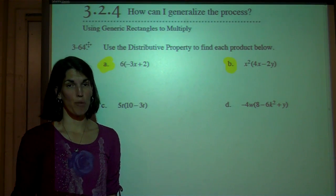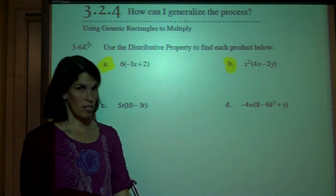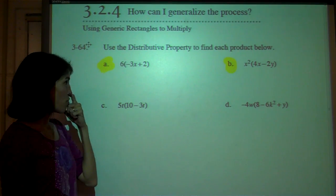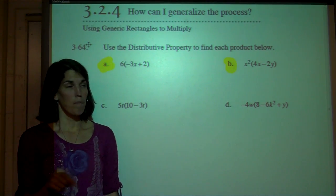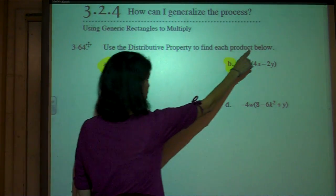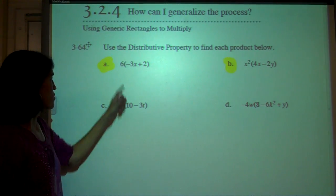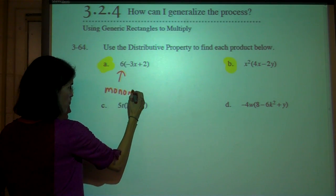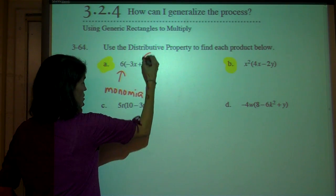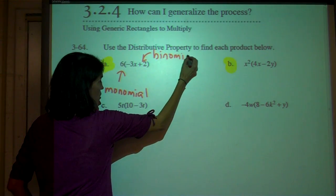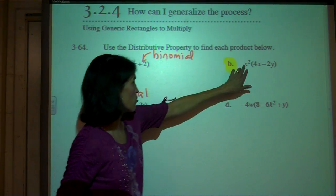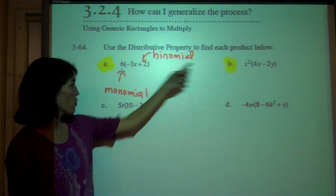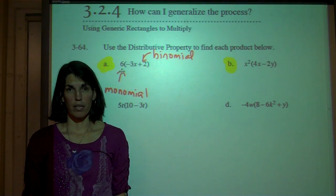You should have already used the distributive property in some previous math class, so hopefully you've already seen that. What I would like for you to do first is hit pause on this video and use the distributive property to find each product below — just do A and B, the highlighted ones. Then hit play when you're ready to go again.